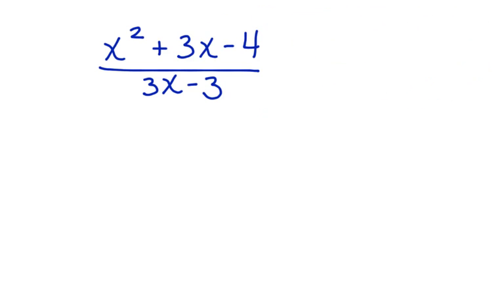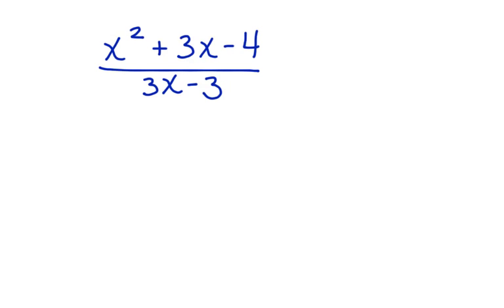Let's look at another one. x squared plus 3x minus 4 divided by 3x minus 3. Again, we can factor the numerator into two binomials. x squared factors to x and x.